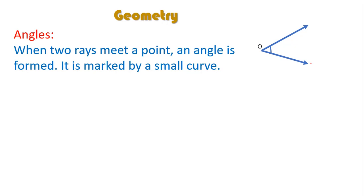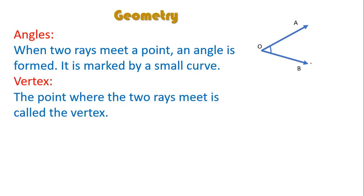And next vertex. The point where the two rays meet is called as the vertex. In this angle two rays meet at the point O because of that so this point O will be called as the vertex.